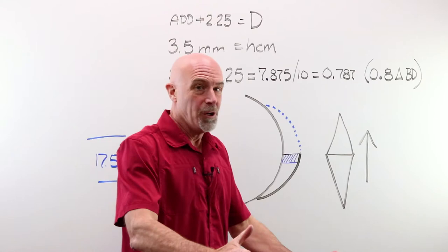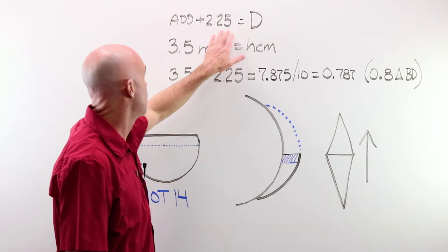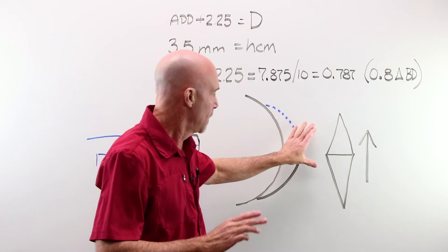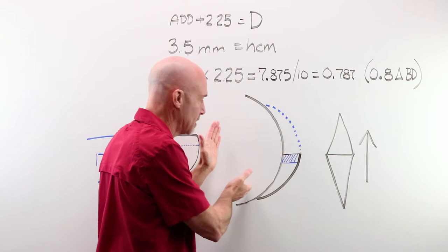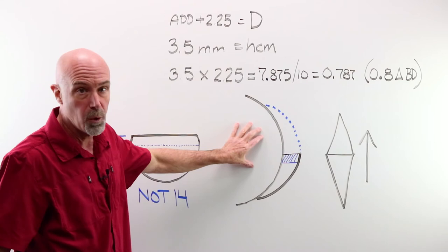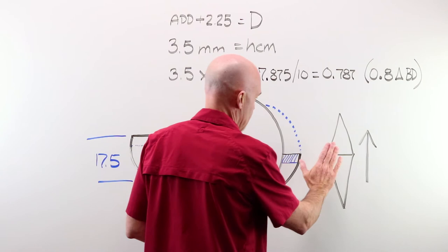We have solved for HCM, which is 3.5 millimeters, and we have D, which is 2.25, which is our add power. The add portion of this is just a super simple spherical plus lens, quite literally slapped onto the front of that distance prescription, whatever it might be. That's why we can think about this as being a separate piece that doesn't have to take into account what that distance prescription is behind it.